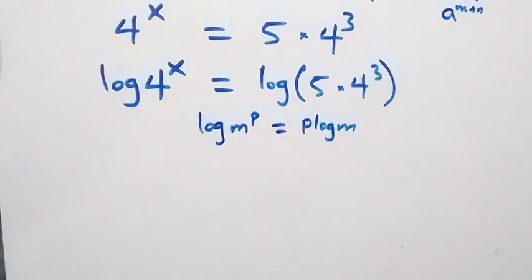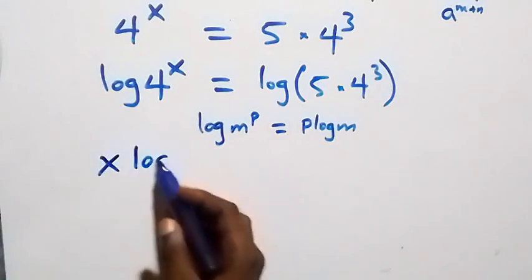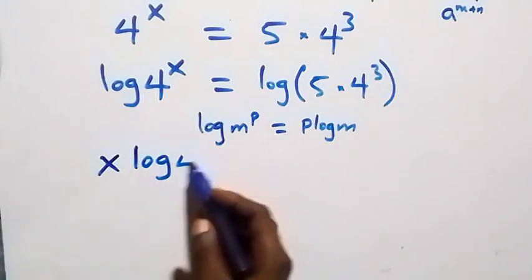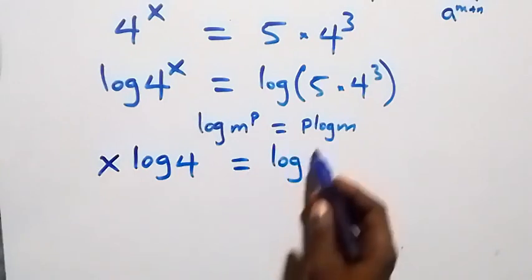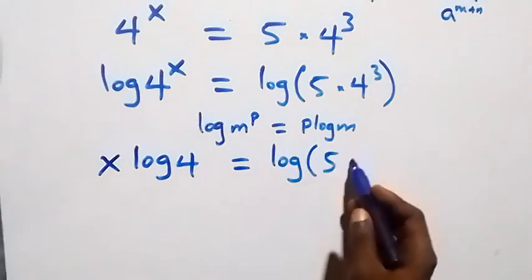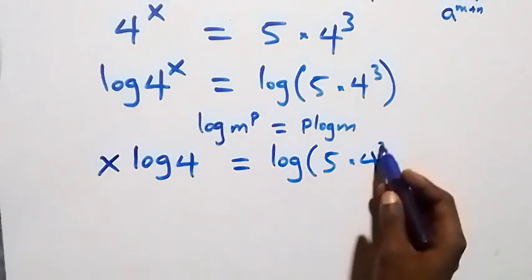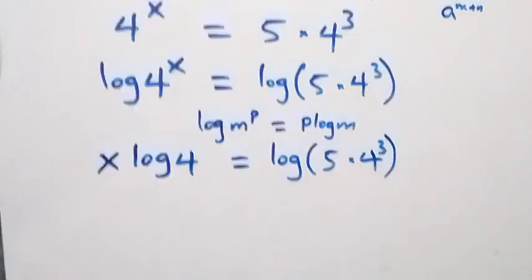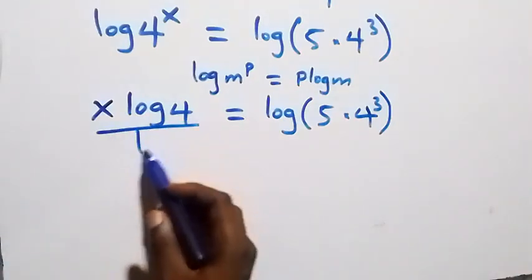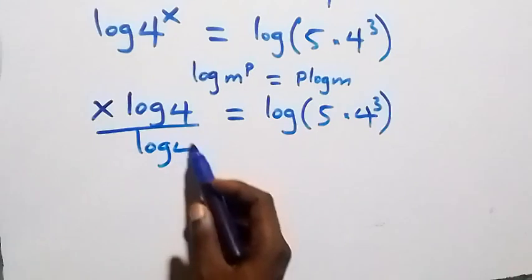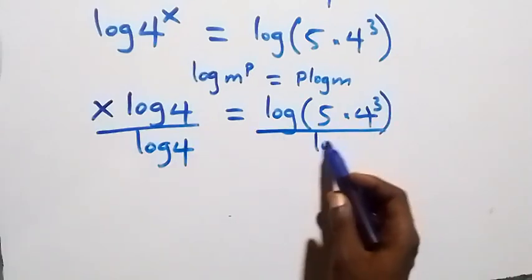Applying the power law, this becomes x times log 4 equals log of 5 times 4 raised to power 3. The next step is to divide both sides by log 4.